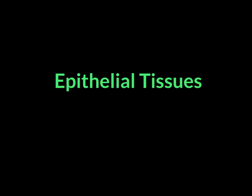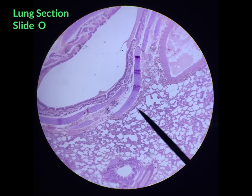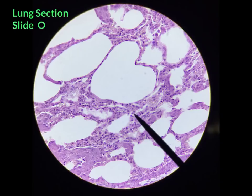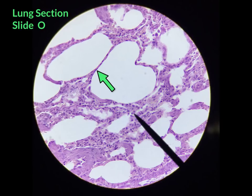Let's start with epithelial tissues. The first tissue you'll be identifying is simple squamous epithelial tissue, and it will come from the lung section from slide O. When you look at slide O under low power, you can see a variety of different tissues. The area to look for simple squamous epithelial tissue is the alveoli — the tiny little air sacs found within the lungs — whose walls are composed of simple squamous epithelial tissue, as shown here.